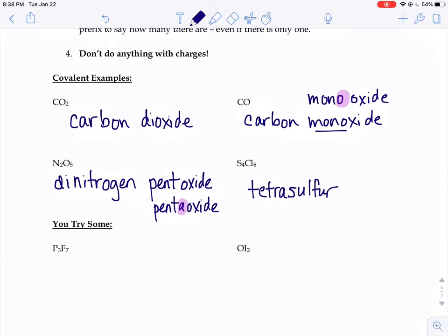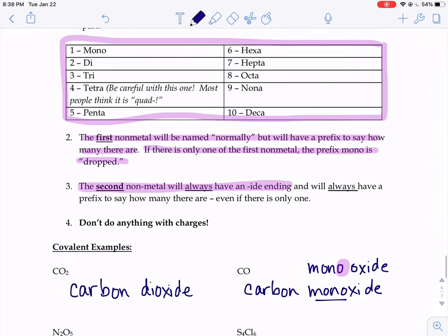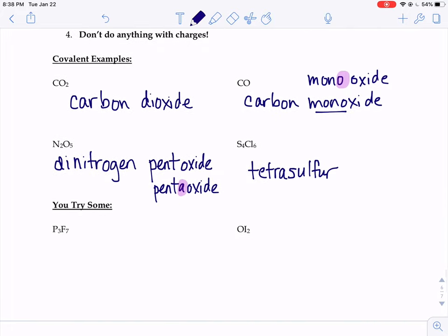The next one, six Cls. We need the prefix for six, hexa, and the second nonmetal always has an -ide ending.